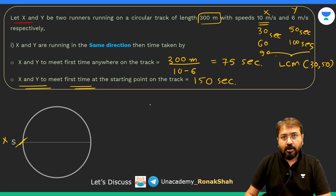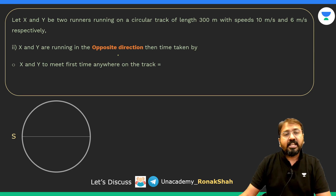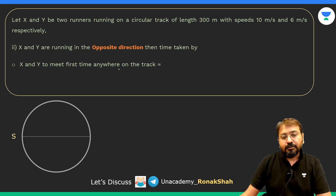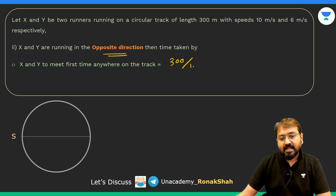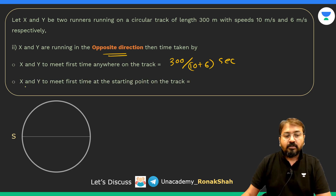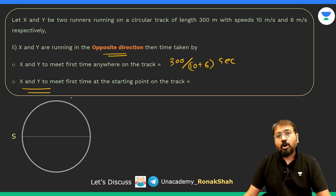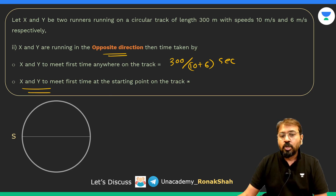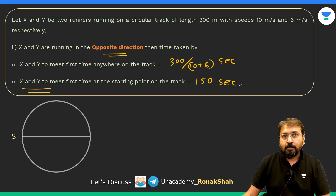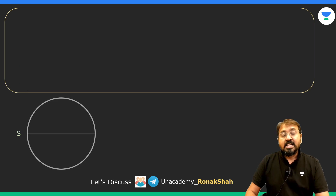Now, what if they are running in the opposite direction? The time taken by X and Y to meet for the first time anywhere on the racetrack — since they are running in opposite direction, the relative speed is the sum of their speeds, 10 plus 6. If they are running in the opposite direction, the time to meet at the starting point remains the same as in the same-direction case.